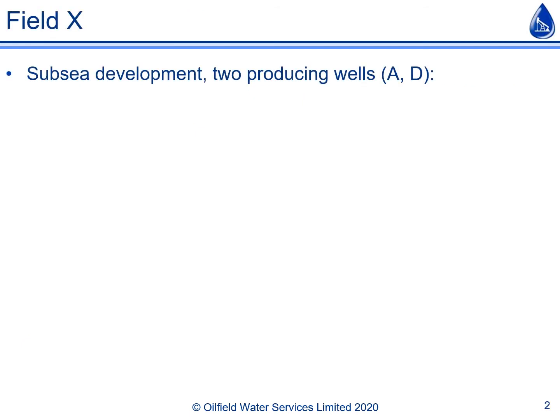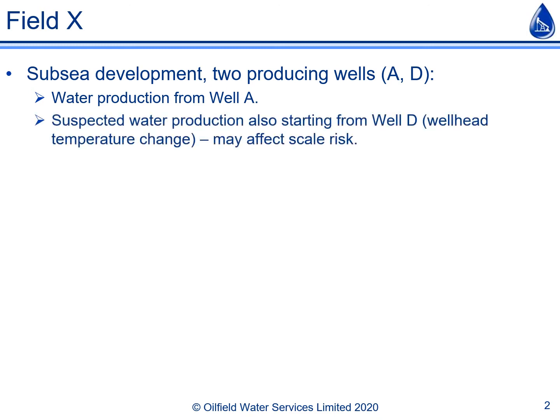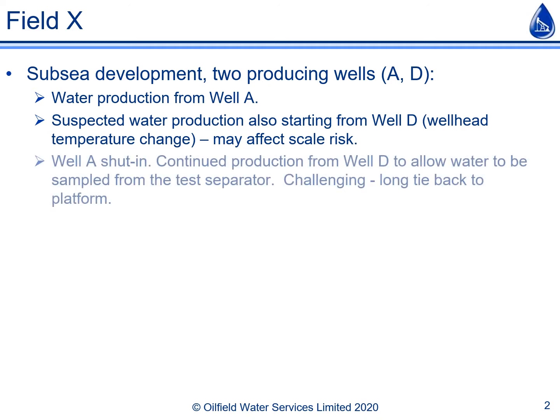This example is from a field where there were two producing subsea wells, wells A and D. There had been water production from well A previously, but the operator suspected that water production had also started from well D due to a small change in temperature at its wellhead. Their concern was that production of water from well D would cause a change in scale risk, so they shut in well A and tried to obtain a water sample from well D.